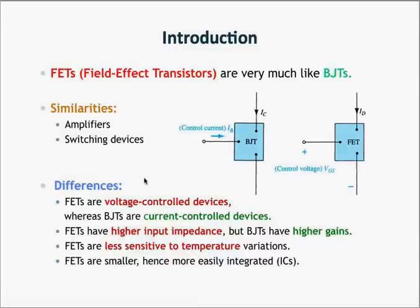Previously we have studied the BJTs or Bipolar Junction Transistors. From now on, we are going to be studying the field effect transistors, which are also known as FETs. As the acronym implies, FETs is just another type of transistor, therefore it can perform similar functions just like the BJTs. FETs can be used as an amplifier and also as a switching device. FETs are also made up of semiconductor materials and have 3 terminals just like the BJTs.